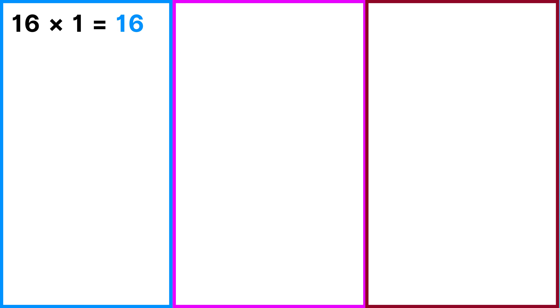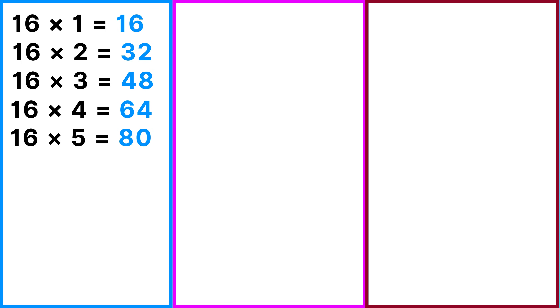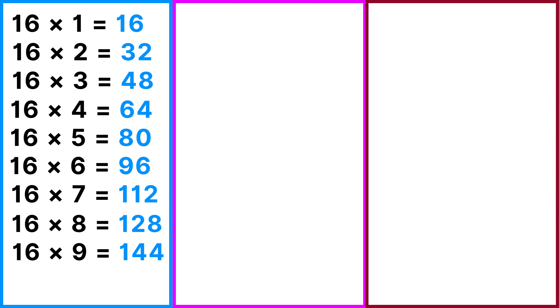Table of 16: 16 ones are 16, 16 twos are 32, 16 threes are 48, 16 fours are 64, 16 fives are 80, 16 sixes are 96, 16 sevens are 112, 16 eights are 128, 16 nines are 144, 16 tens are 160.